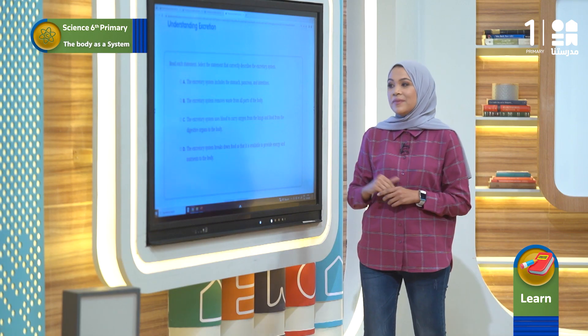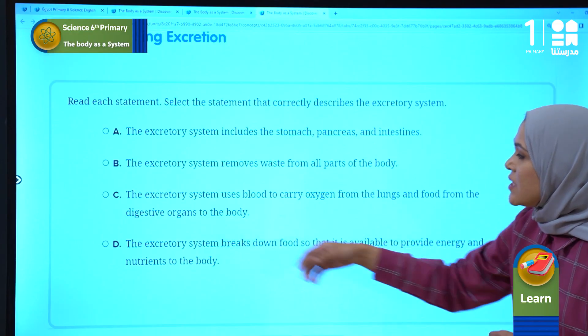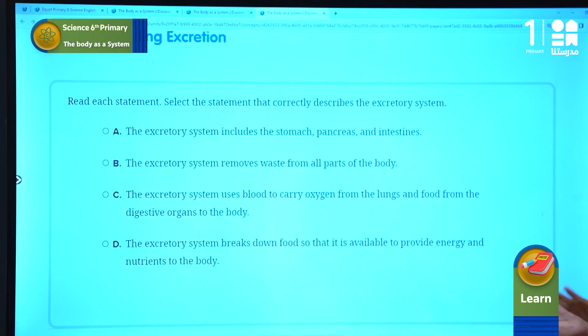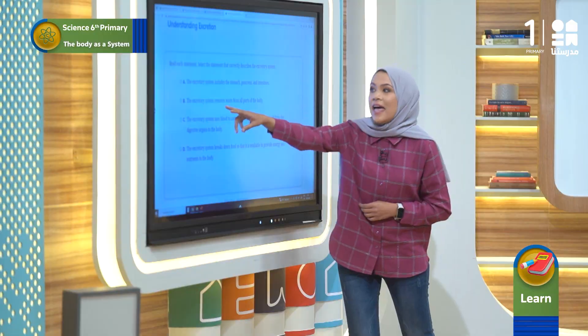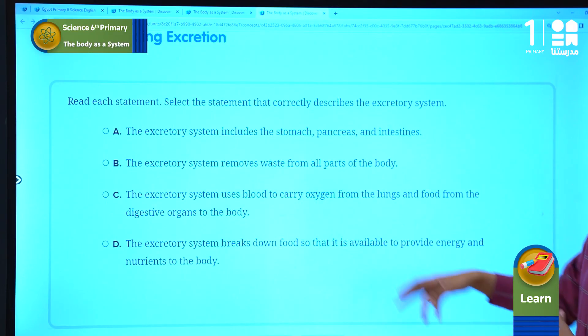The last one says the excretory system breaks down food so that it's available to provide energy and nutrients to the body. Breaking down food is the function of the digestive system, so this is not the right answer. The right answer is the excretory system removes wastes from all parts of the body.